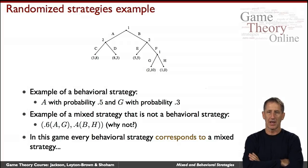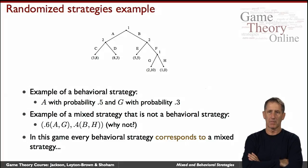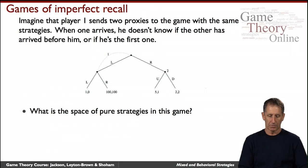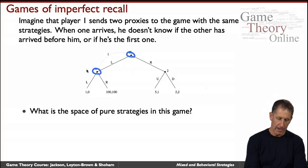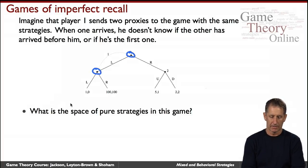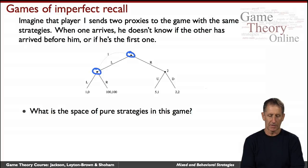A game of imperfect information has perfect recall if, intuitively speaking, the agents have full recollection of their experience in the game. That means wherever they are in each information set, they know all the information sets they visited previously and all the actions they've taken. You can think of it as sending two agents on your behalf to play, where neither agent knows which of the two places it landed in, or what the other agent did.